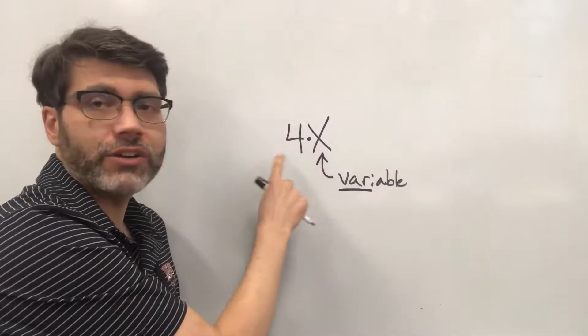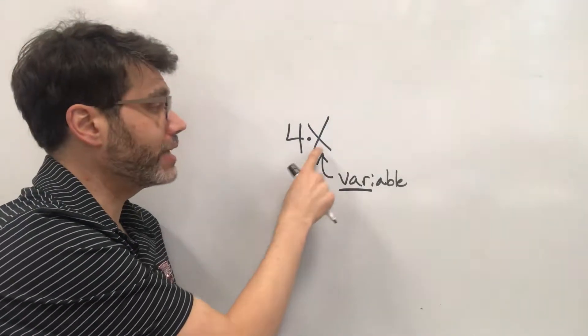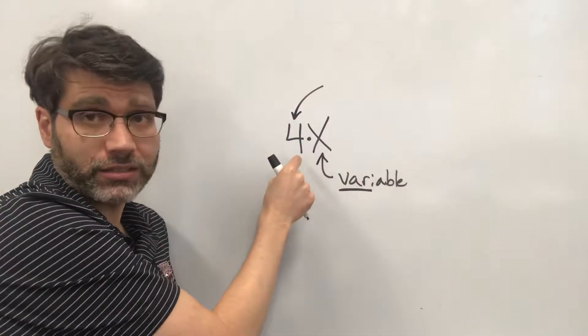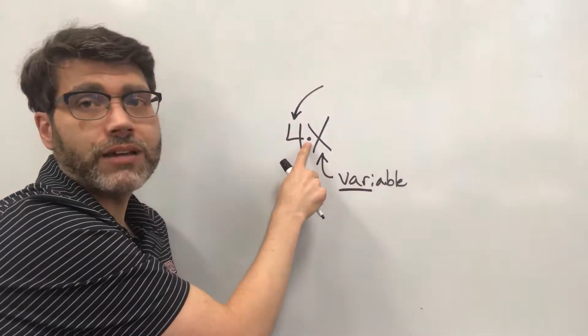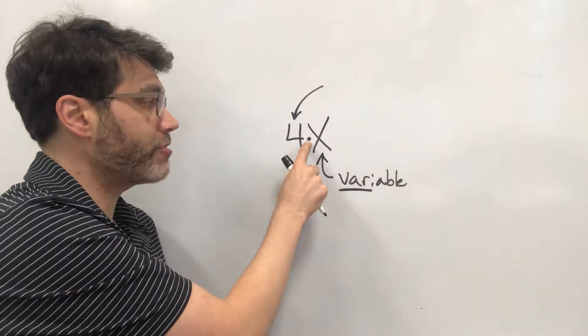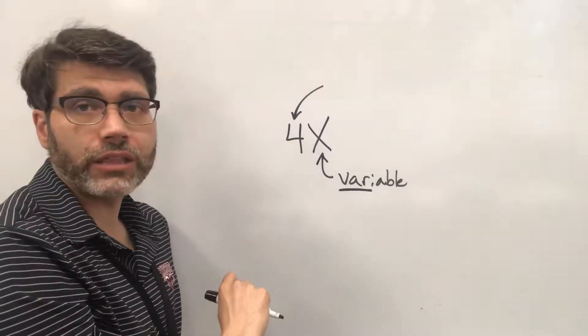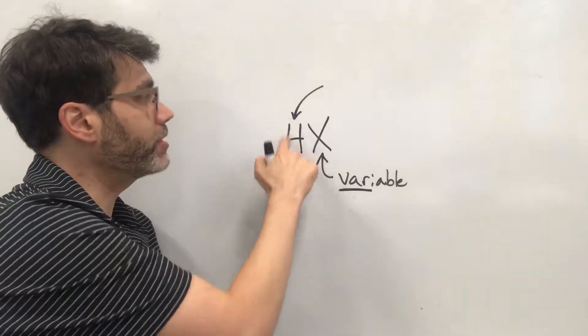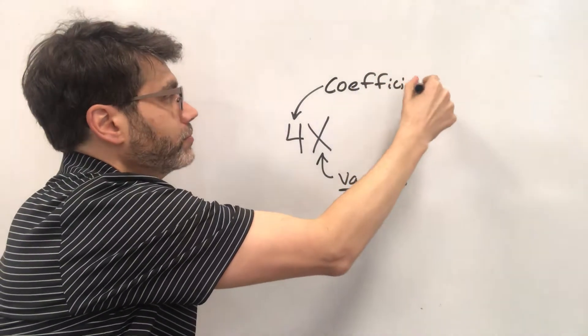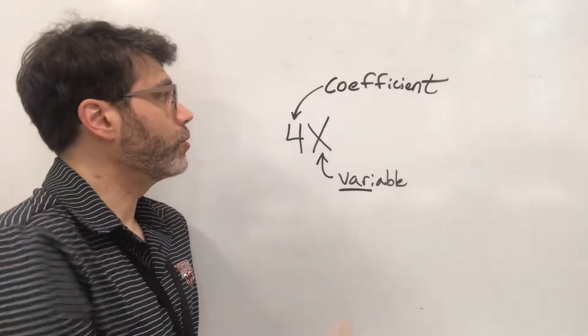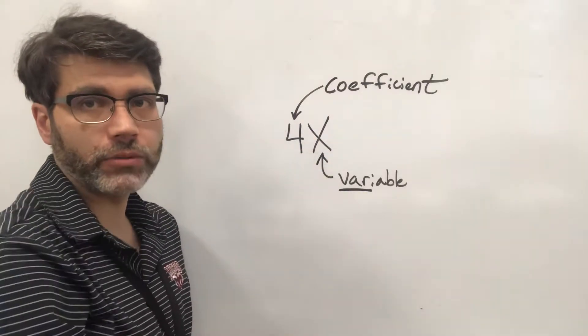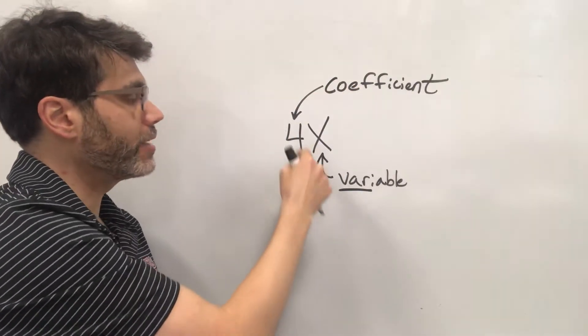Whatever is being multiplied if there's a number that is being multiplied against the variable it is usually traditionally put right out front and there is no multiplication sign because we just assumed that they're going to be multiplied. So from now on you're not going to see a little dot there it's just going to be nothing. So 4x is 4 times x. The number that's out front is called a coefficient. Okay so co meaning is like companion. So you can think of coefficients as companions to the variable. Alright so now we have coefficients and we have variables.